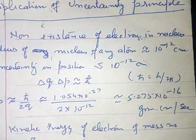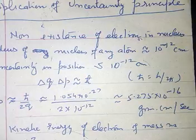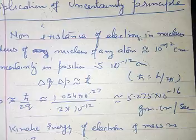Now, if this is the uncertainty in momentum of the electron, the momentum of the electron must be at least comparable with its magnitude. That is p will approximately equal to 5.275 into 10 raised to the power minus 16 gram centimeter per second.